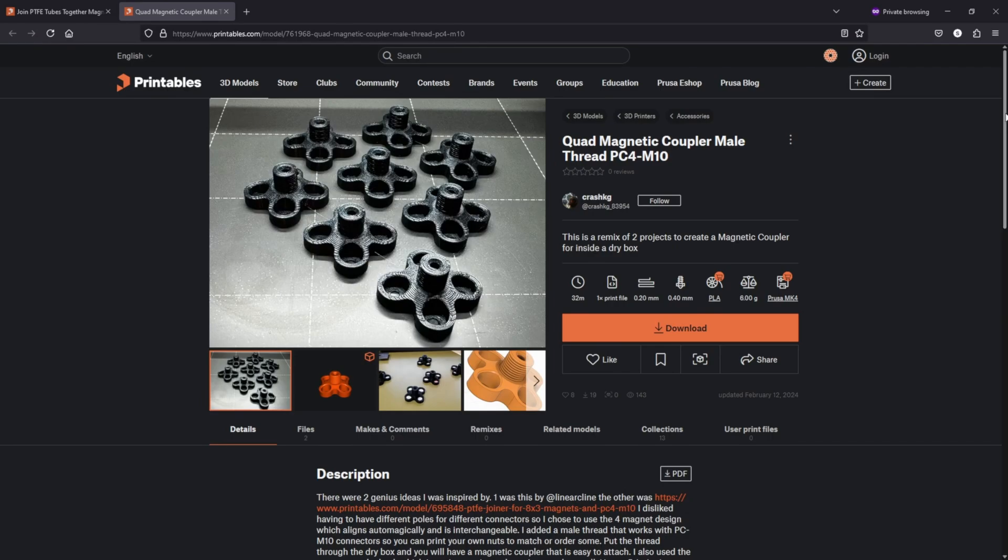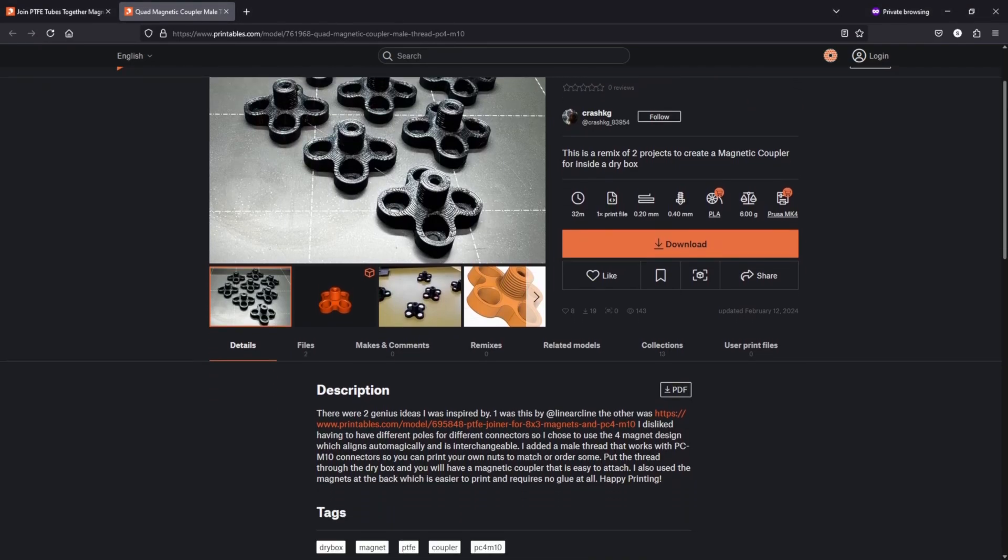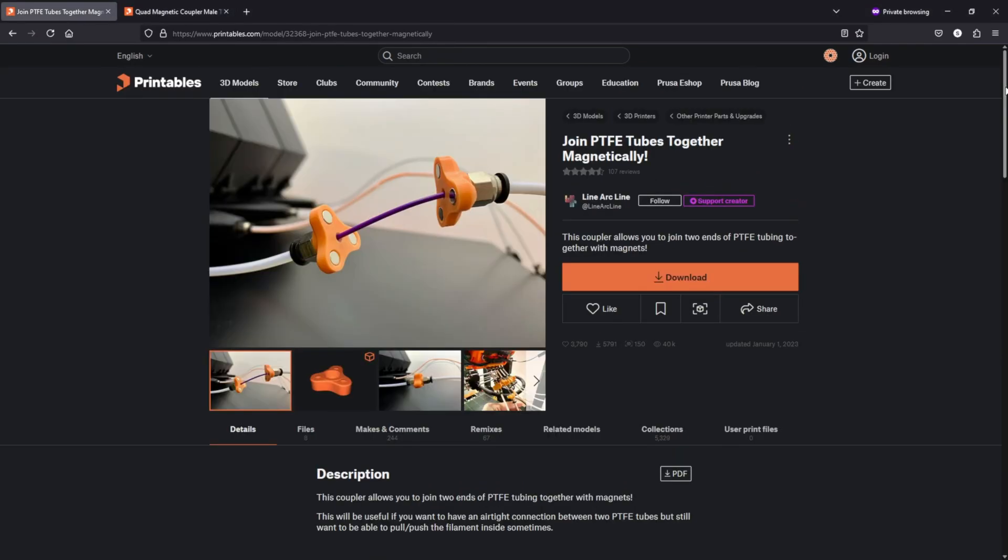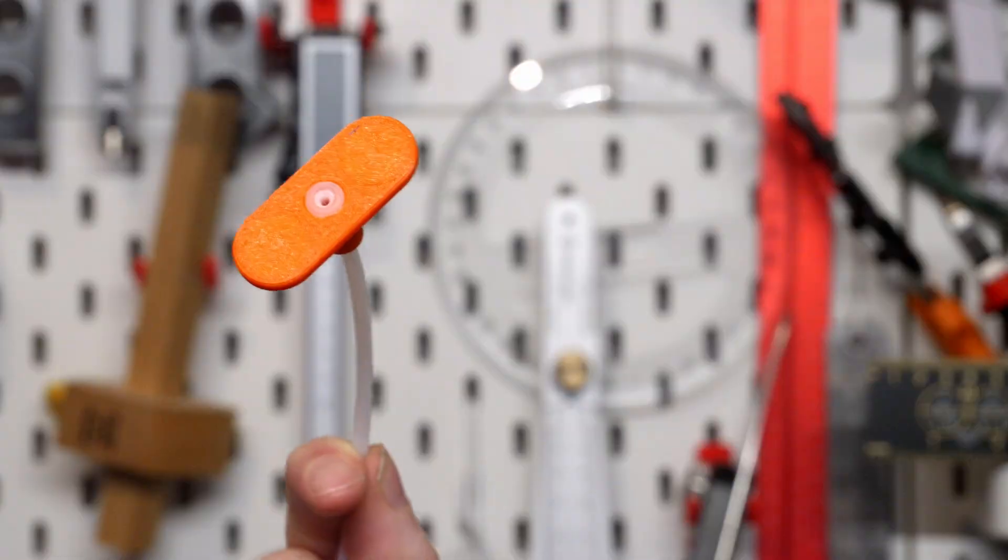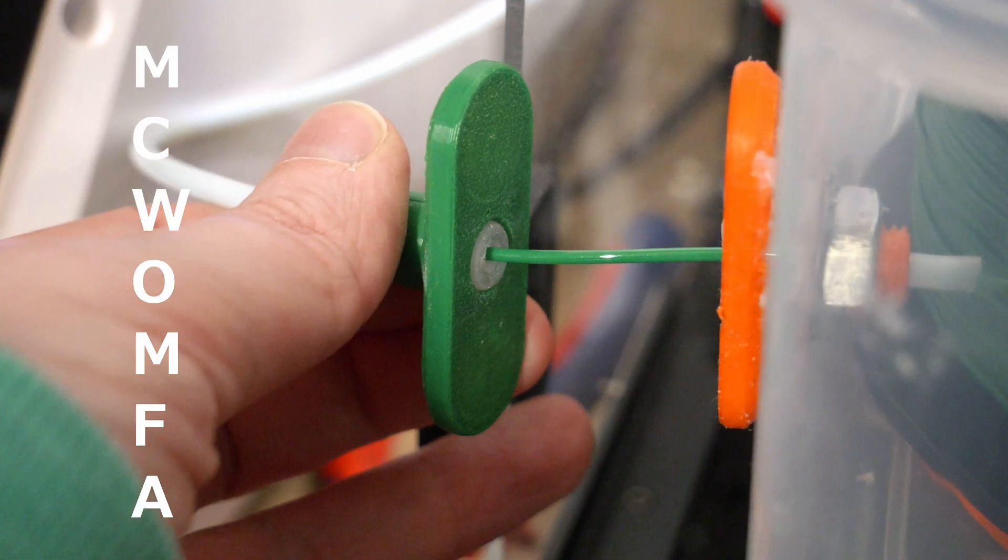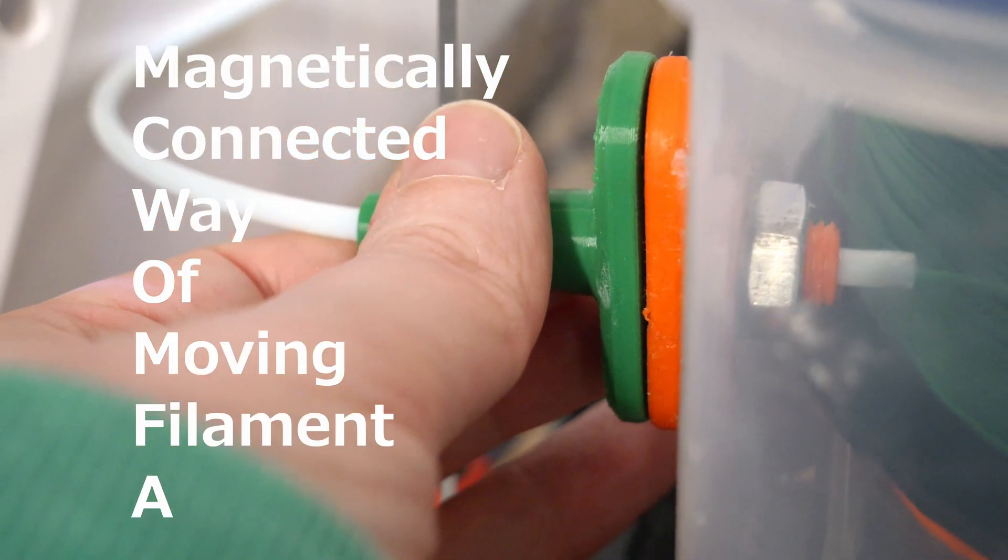I nearly remixed this connector itself, a 4-magnet remix of this popular 3-magnet connector, but it didn't have the types of connector I wanted, nor did I have the magnets it suggested, so I decided to just start from scratch. I wanted a magnetically connected way of moving filament around. So I made one. This is McWonfer, the magnetically connected way of moving filament around.